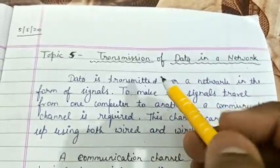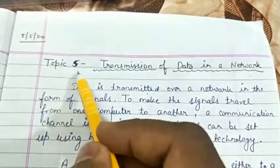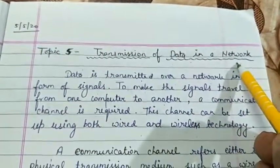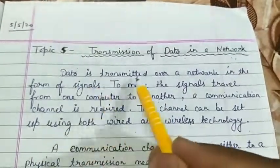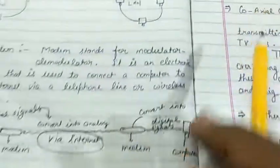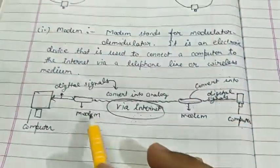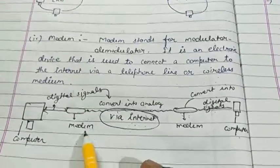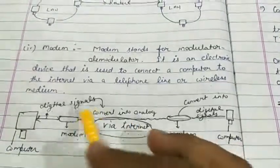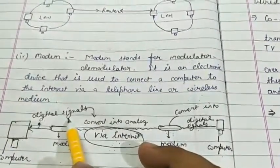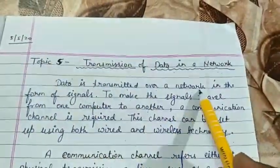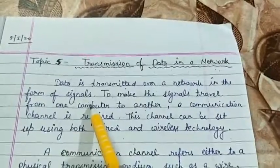Hello students, today I will teach you topic number 5 of chapter 1: transmission of data in a network. Data is transmitted over a network in the form of signals.